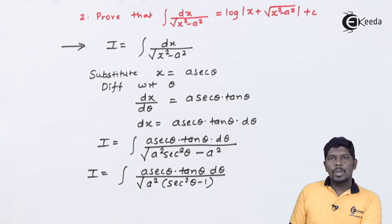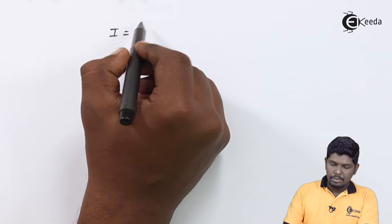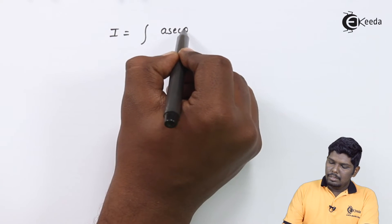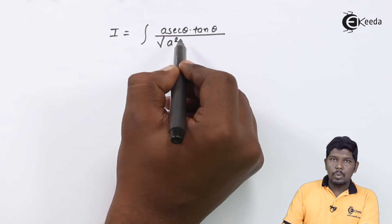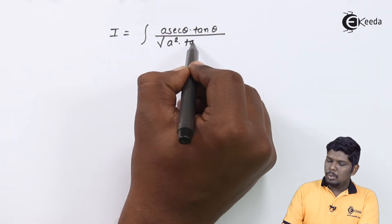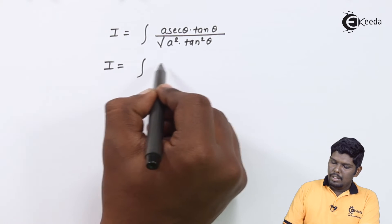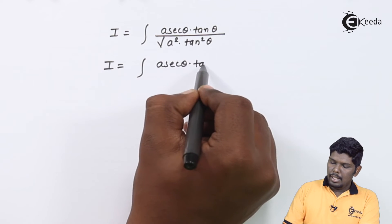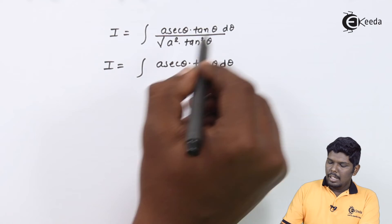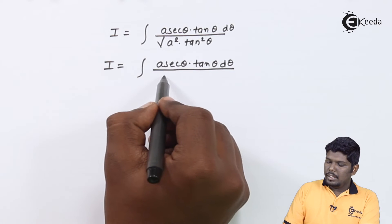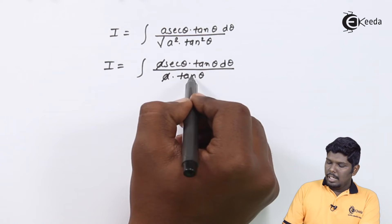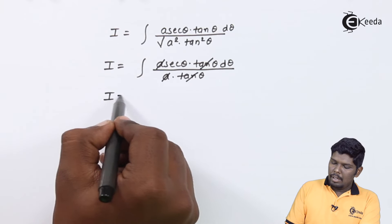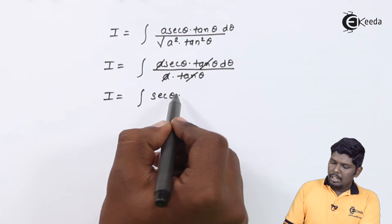Here the value of sec squared theta minus 1 gives tan squared theta using the identity. Further, we have I equal to integral of a sec theta into tan theta upon under root of a squared tan squared theta. The under root of a squared is a, and under root of tan squared theta is tan theta. Here a will be cancelled, tan theta will also be cancelled, and the remaining part we have is the integral of sec theta d theta.